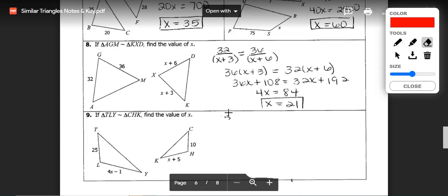The setup on this one is the hardest part. You've got side TL which is going to correspond with CH of 10. And you're going to have that be equal to LY, which is 4X minus 1. And that would correspond to KH.